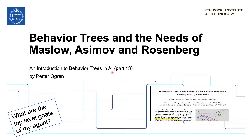Hi guys! Today we're going to talk about behavior trees and the needs of Maslow, Asimov, and Rosenberg. These are at least two famous people, and one semi-famous dude. This video is inspired by the paper 'Hierarchical Needs-Based Framework for Reactive Multi-Robot Planning with Dynamic Tasks.' It's inspired by some of the ideas there, but we're not going to follow the content very closely.